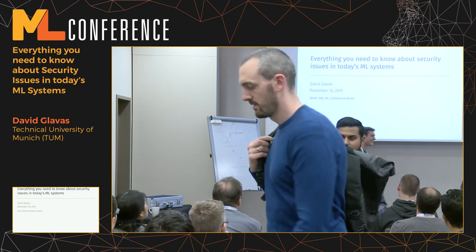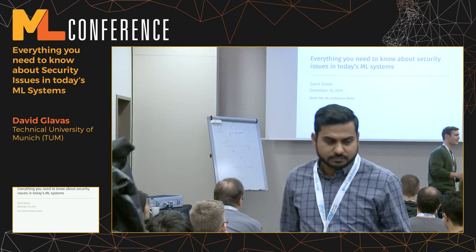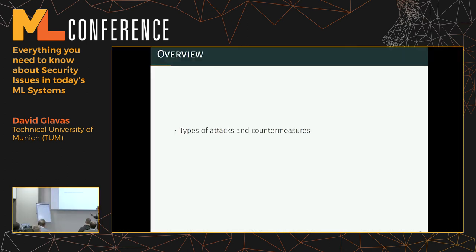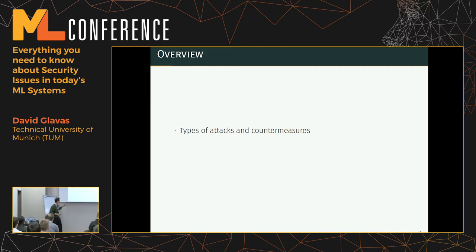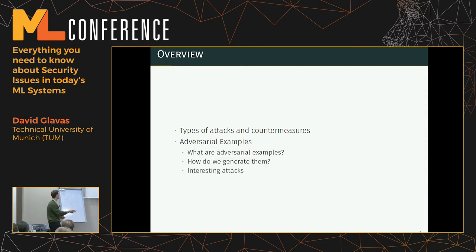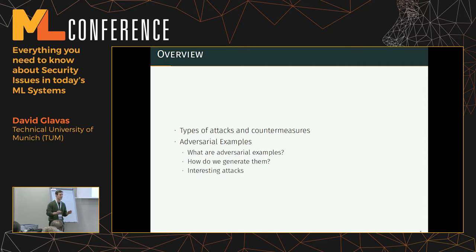The way we'll structure this: at the beginning we'll talk about different types of attacks and some countermeasures people have developed. One type of attack deals with adversarial examples — we'll talk about what they are, how we generate them, and then look at some interesting attacks people have done with them so you can see them in action.